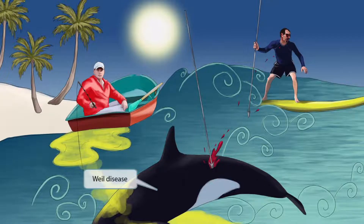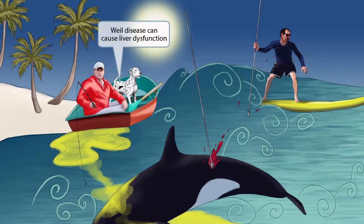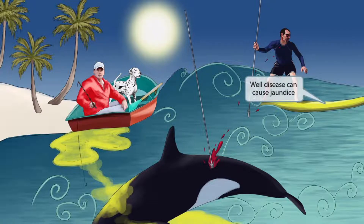Now that we've covered Leptospirosis, let's move on to discuss Weil's Disease. Weil's Disease is simply a severe form of Leptospirosis, so we've shown a poor whale getting attacked by these two ruthless hunters. We've added an innocent Dalmatian dog on the fisherman's boat; the dog has a liver spot on its trunk, which is here to help you remember that Weil's Disease can cause liver dysfunction. Remember the yellow board — this should help you remember that Leptospirosis, including the more severe form Weil's Disease, can cause jaundice.